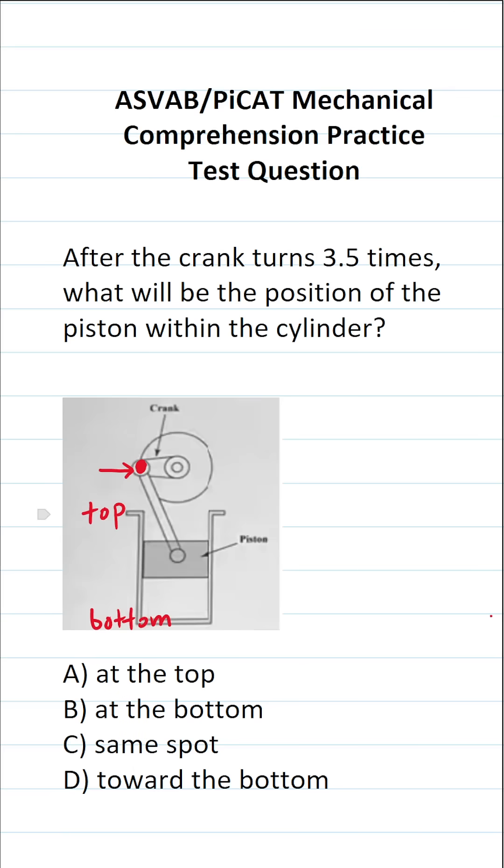Now this crank rotates in a circular motion. So when the crank is at this position here, it pulls the piston to the top of the cylinder.